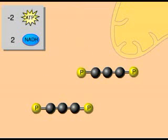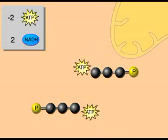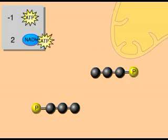The energy released is used to attach phosphate groups. The phosphates are transferred to ADP, finally making some ATP. This way of making ATP is called substrate-level phosphorylation.